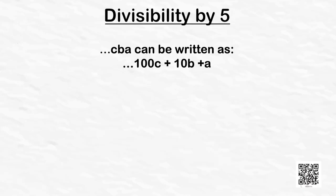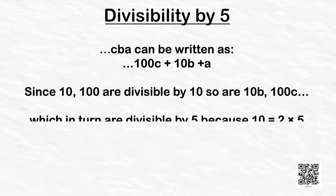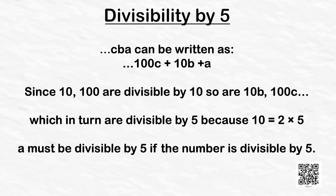Let's try to explain this rule. Any number ...CBA can be written as ...100C + 10B + A. Since 10 and 100 are divisible by 10, so are 10B, 100C and so on, which in turn are divisible by 5 because 10 = 2 × 5. And as far as number A is concerned, it must be divisible by 5 if the number is divisible by 5. So A has to be either 0 or 5.